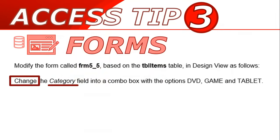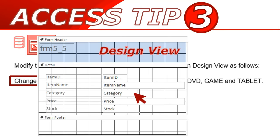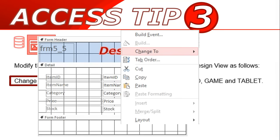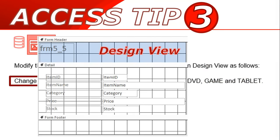Sometimes they ask you to change an existing field to a combo box. In that case, right-click on the field, go to Change To, and select combo box — that should activate the wizard. However, if the wizard doesn't come up, a workaround is to cut that particular field out and add it back like we did in the first part of this tip.